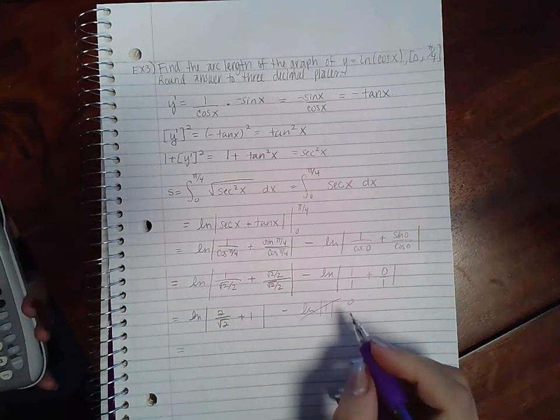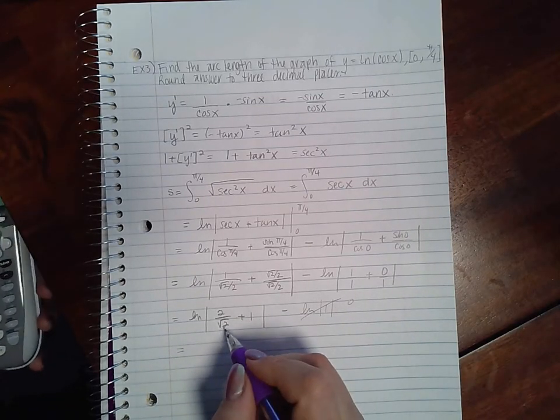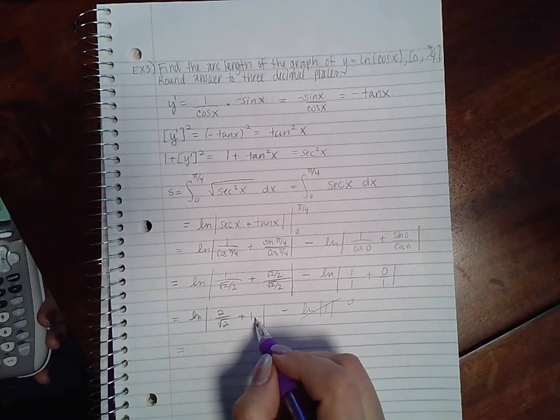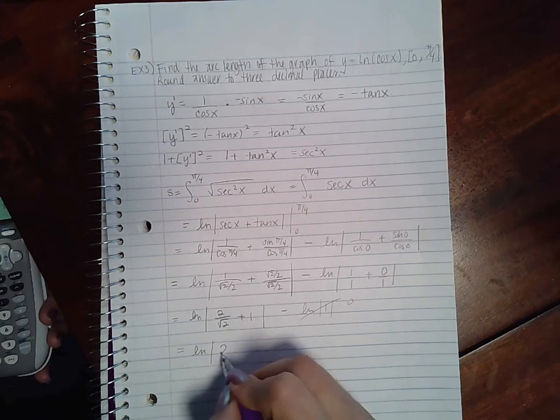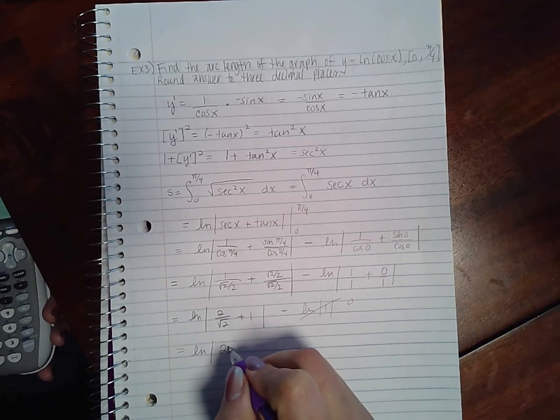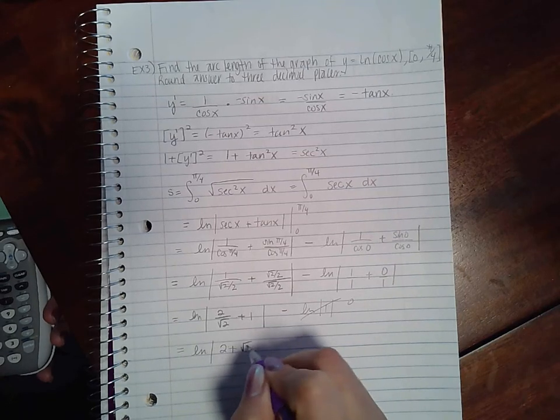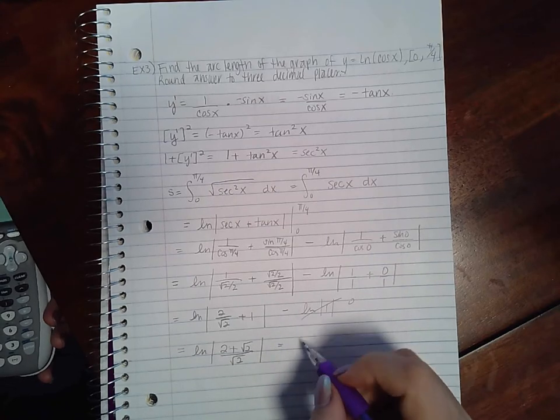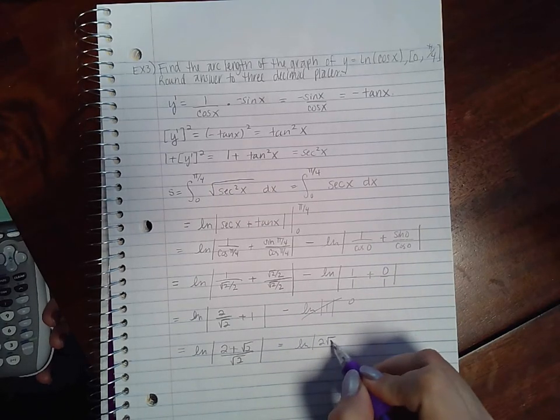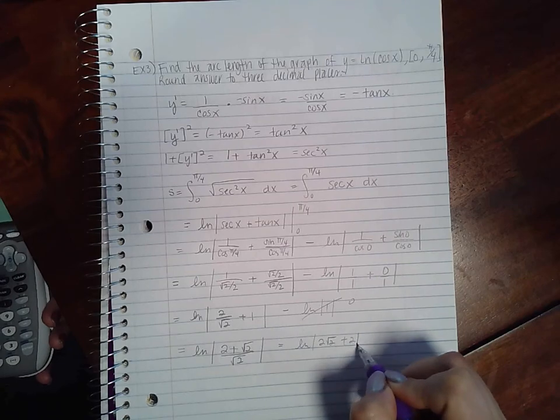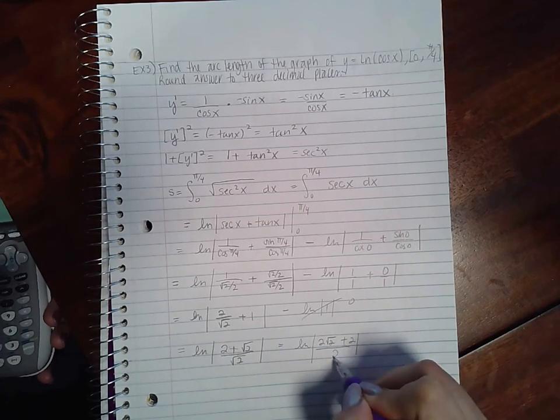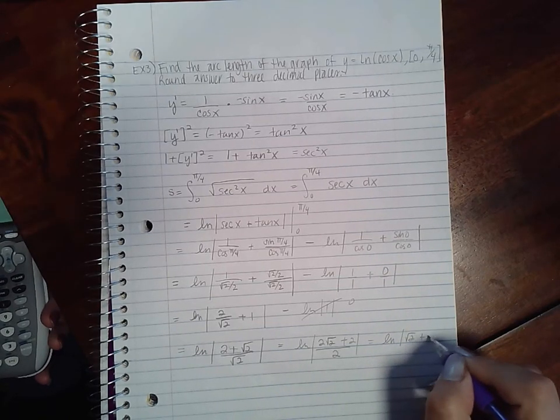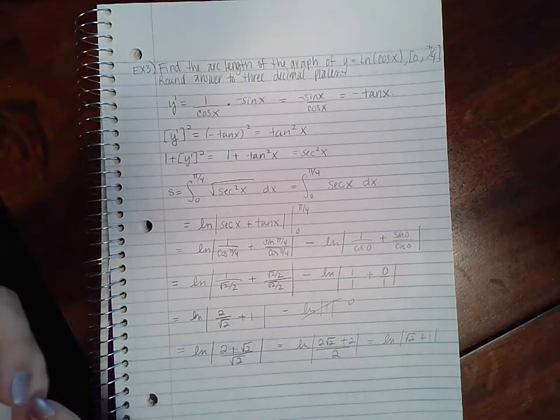So we end up with... if I get a common denominator and then rationalize that denominator I end up reducing and get √2 + 1. So if I type that in my calculator...